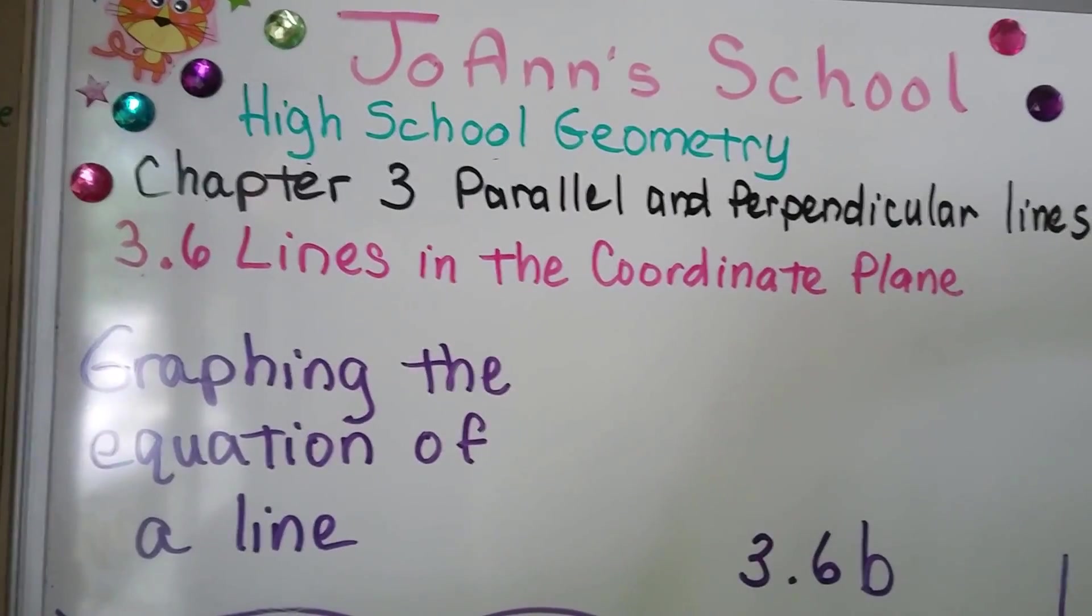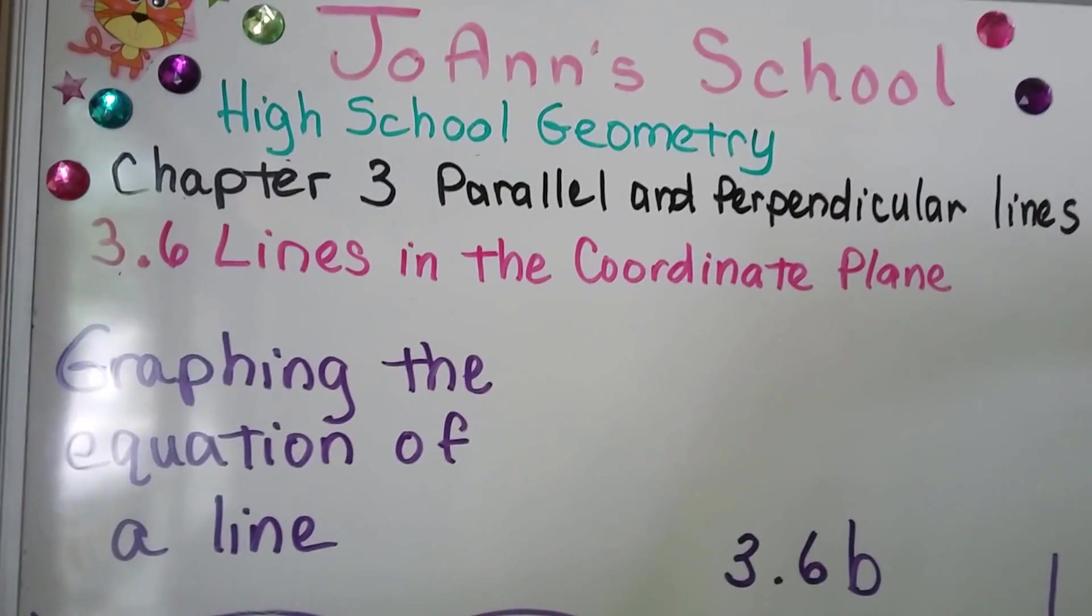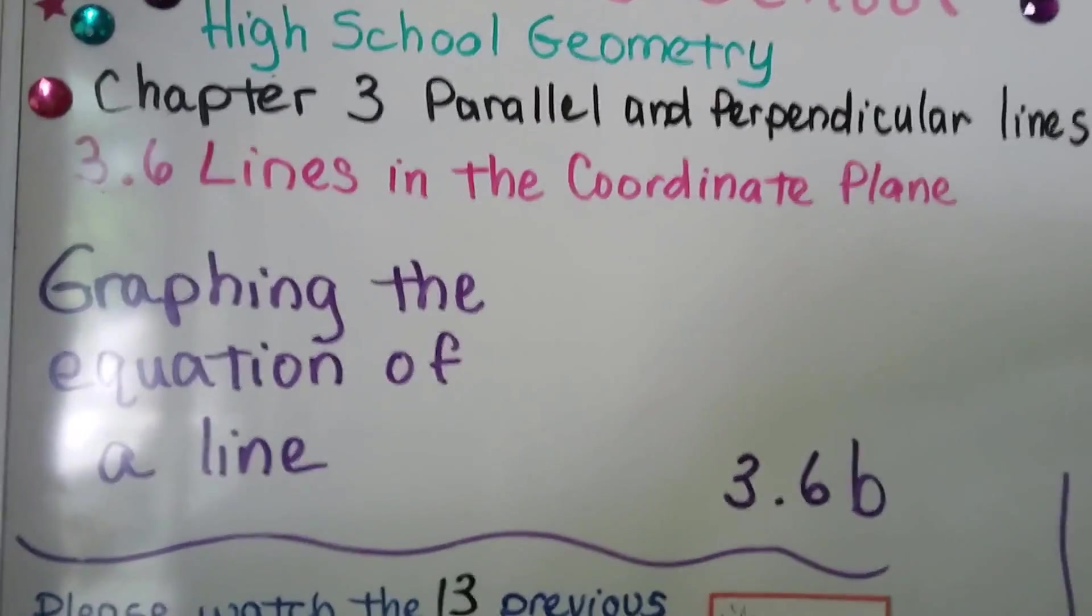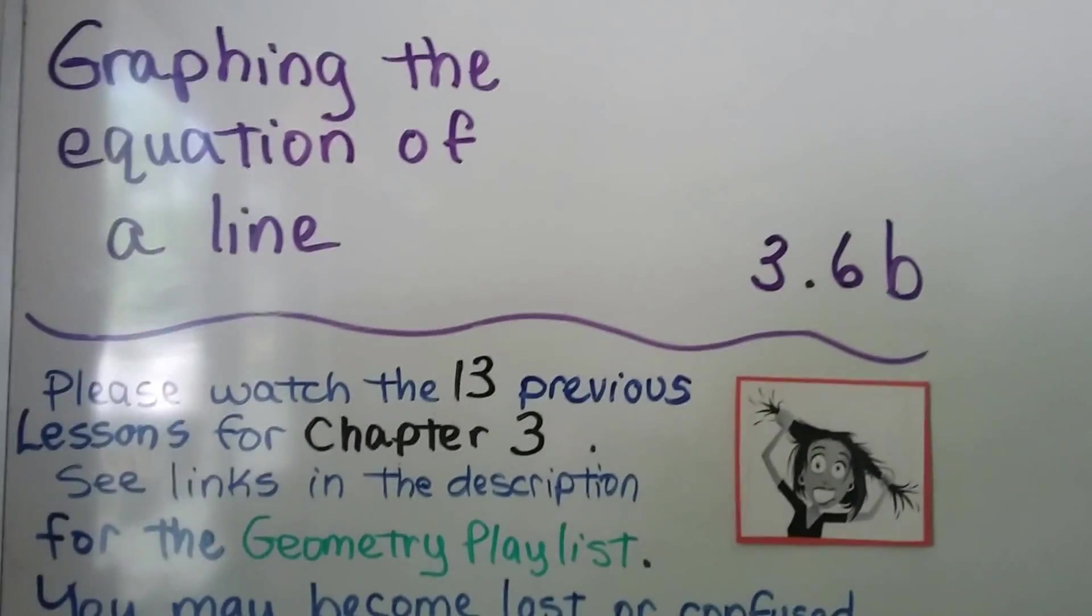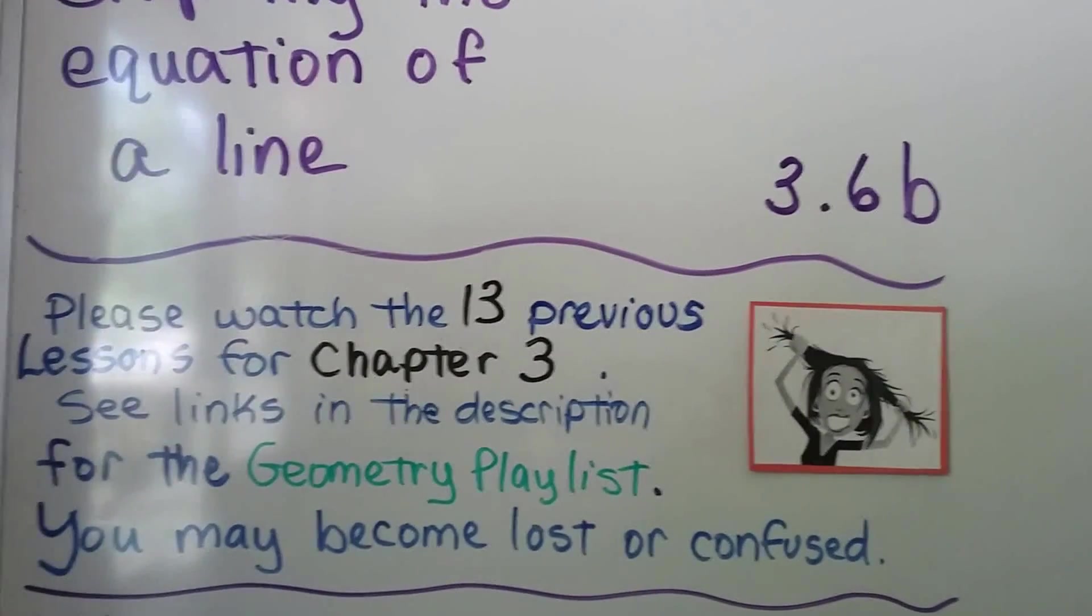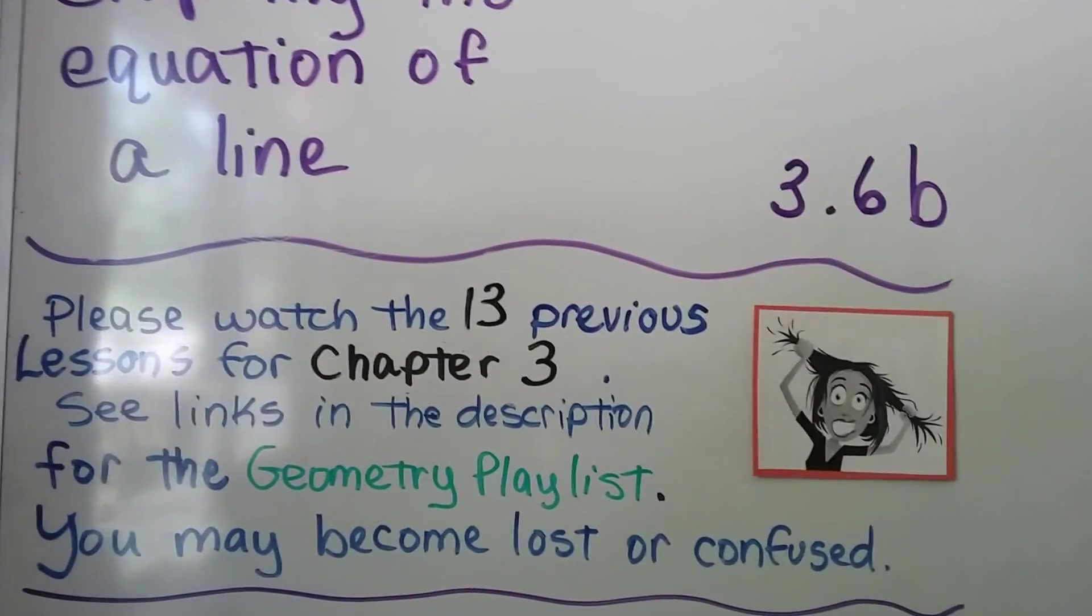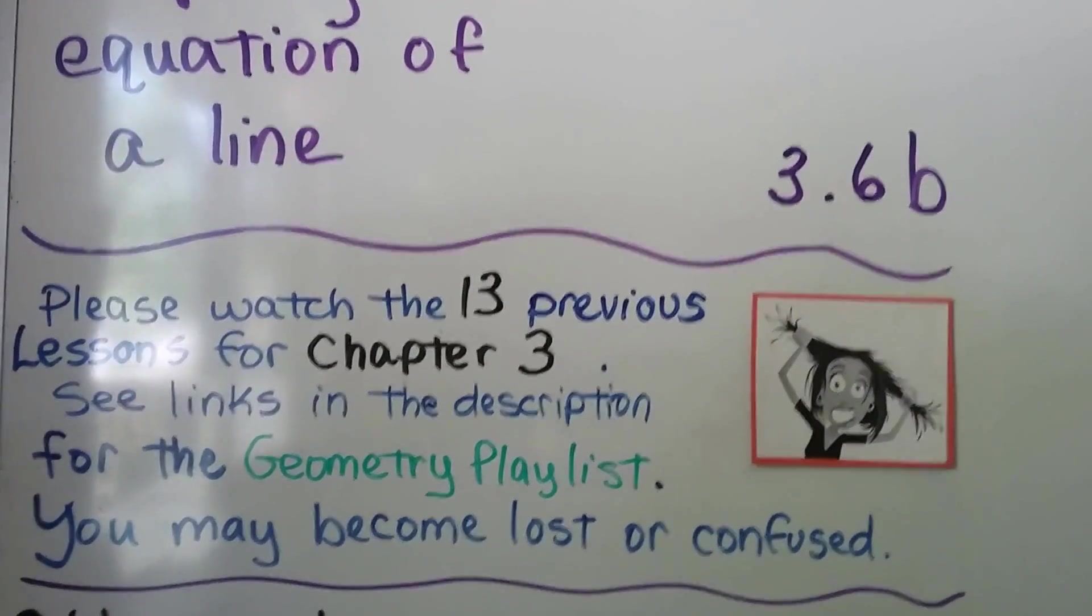Graphing the equation of a line. This is lesson 3.6b, which tells us there's a 3.6a, so if you missed it, you may become lost or confused. There's a link to the geometry playlist in the description to watch the 13 previous lessons for chapter 3.